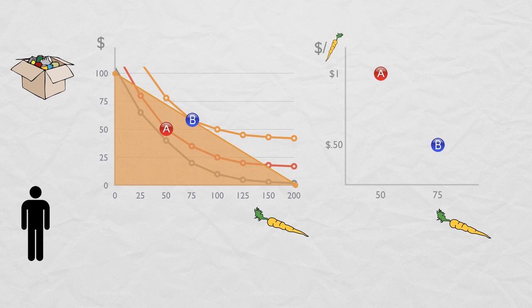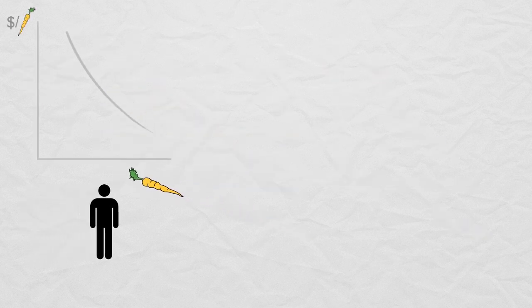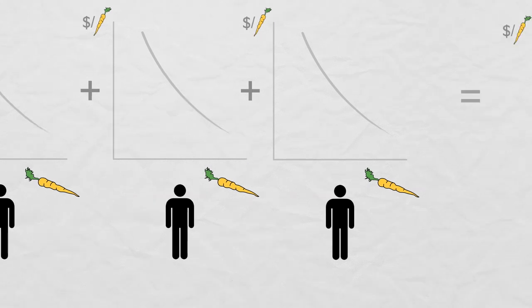What we've just done is we've found two points on Ezekiel's demand curve for carrots. If we were to repeat this exercise many times, we would eventually reveal Ezekiel's entire demand curve for carrots. And if we wanted to find a demand curve for many consumers in an economy, all we'd have to do is find each of their individual demand curves and add them up.